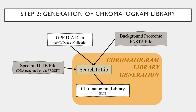The next step is the generation of the chromatogram library using the Search2LIB tool. The chromatogram library is generated using the background FASTA file, the DLIB library, and the .mzml GPF dataset collection previously converted by msconvert. The generated chromatogram library in an ELIB format will take the place of the original DLIB library input, and I will discuss the importance of this later on in the tutorial.